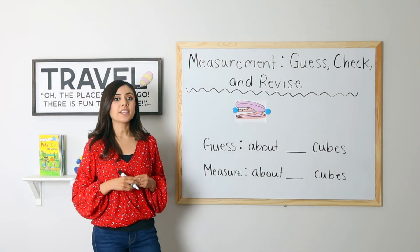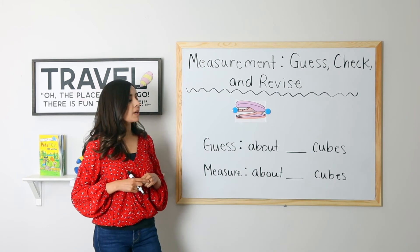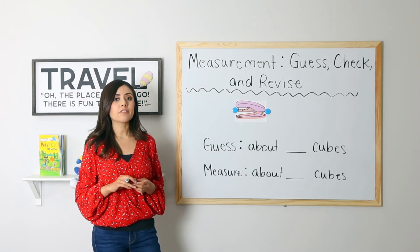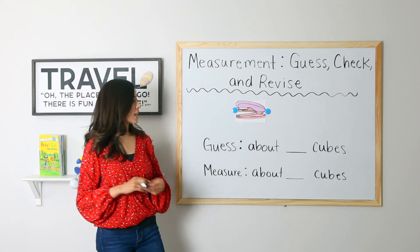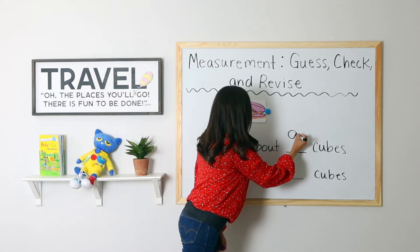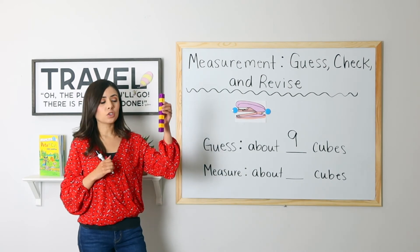Last example, I have a stapler. My guess is that this stapler is the same length of about nine cubes. I'm going to guess nine cubes.